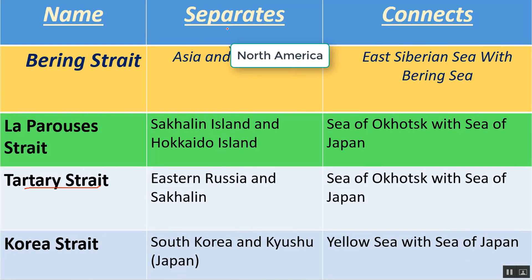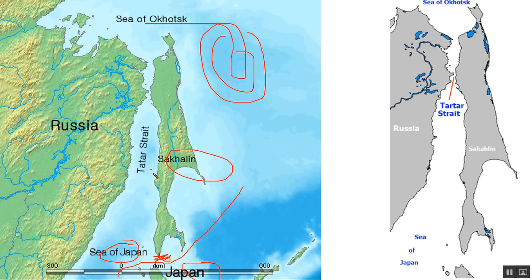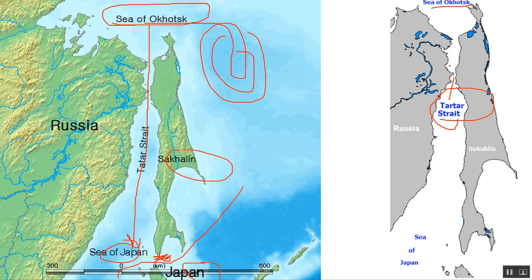The next one is the Tartary Strait — also called the Tatar Strait. It separates Eastern Russia from Sakhalin Island, and it connects the Sea of Okhotsk with the Sea of Japan, similar in location to the La Perouse Strait. Here on the map, this is the Tartary Strait separating Eastern Russia and Sakhalin Island.